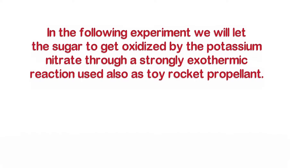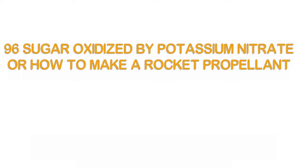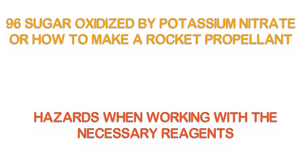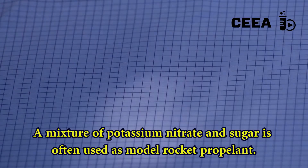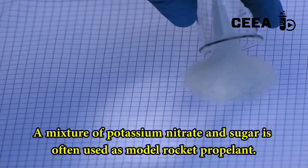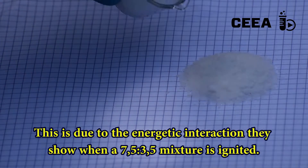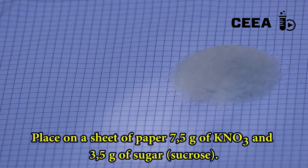Experiment number 96: Reaction of sucrose with potassium nitrate, or how to make rocket propellants. When using potassium nitrate we have to keep in mind its great oxidizing capacity. In this experiment, potassium nitrate oxidizes sugar in a reaction used to propel model rockets. Weigh 7.5 grams of potassium nitrate and 3.5 grams of sugar.